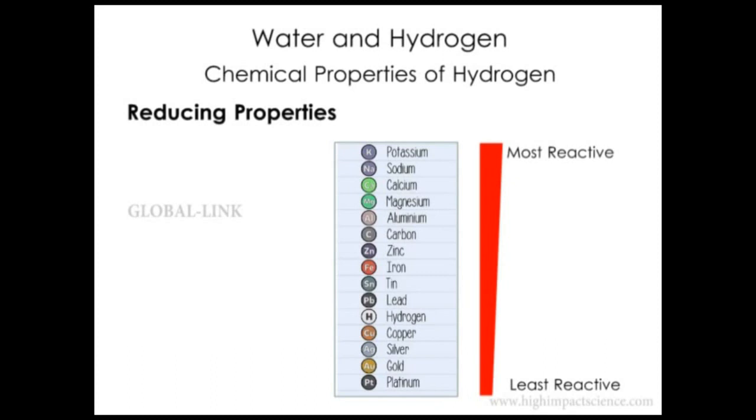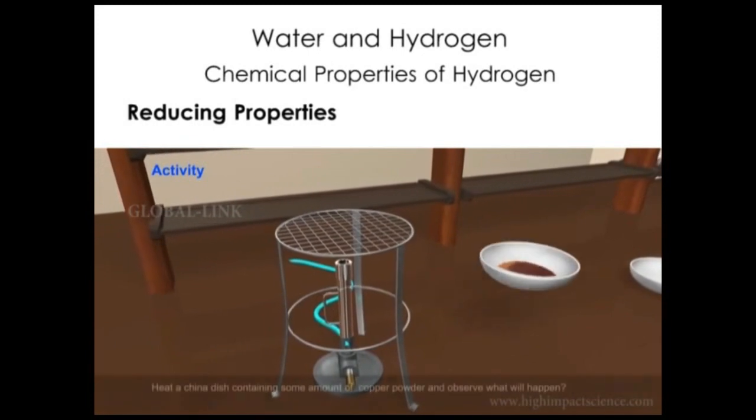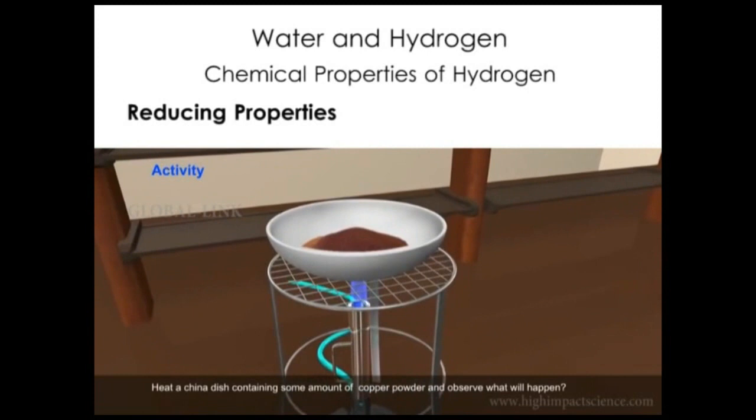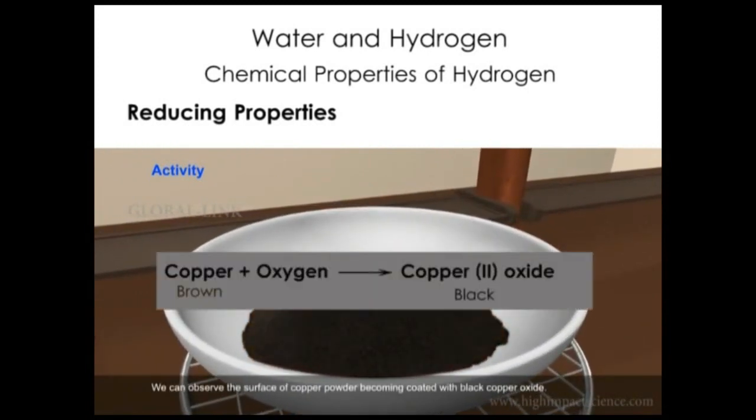For instance, consider this brown copper solid in a china dish. We heat the china dish with copper. The copper powder turns from reddish brown to black. This is copper(II) oxide. Copper combined with atmospheric oxygen to form copper(II) oxide. Therefore, copper is oxidized to copper(II) oxide.